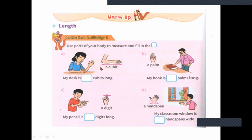With body parts, how can you measure? You can use a cubit, a palm, a digit, and a hand span. Try this: measure your desk in cubits and write the answer. Measure your book with palm, your pencil with digit, and your home window with hand span, and write the results.